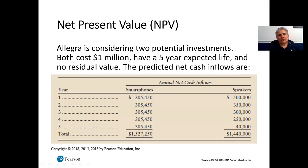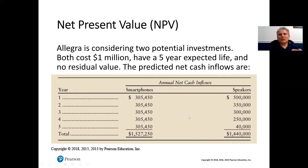For NPV, the example has Allegra considering two potential investments. Both cost $1 million, have a five-year expected life, and no residual value. The predicted net cash inflows for smartphones are $305,450 every year for five years, giving a total cash inflow of $1,527,250. Speakers fluctuate each period, with a total of $1,440,000. We're going to compare these two and determine which option has the highest NPV.